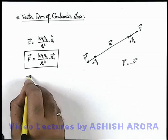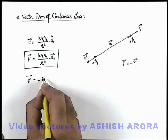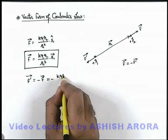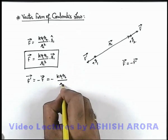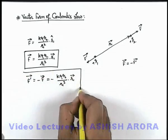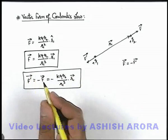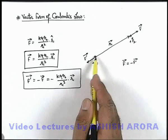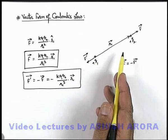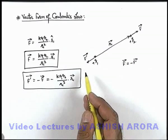And F dash vector can be directly written as negative of F vector. This is negative of k q1 q2 by r1 cube multiplied by r1 vector. This is the way how we write the other vector, or we can say in either direction if we know the position vector of one charge with respect to other, we can calculate the value of F and F dash. So be careful about these expressions of Coulomb's Law in vector form.